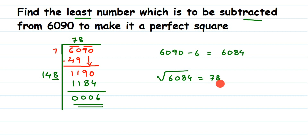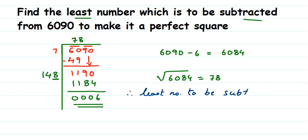How did I get 78? Whatever quotient you got during the division — that is your square root. So the quotient here is 78. If this remainder 6 had not been there, the number would have already been a perfect square, which is 6084, and its square root is the quotient 78. Therefore, the least number to be subtracted from 6090 is 6. I hope this question is clear. If you have any doubt, drop a comment. Thank you for watching.